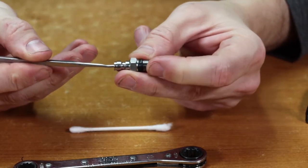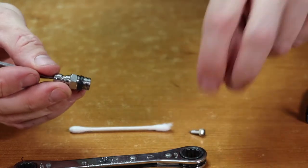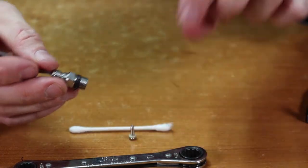If you push with a pick or a paper clip down through the inside, your check valve will come out.